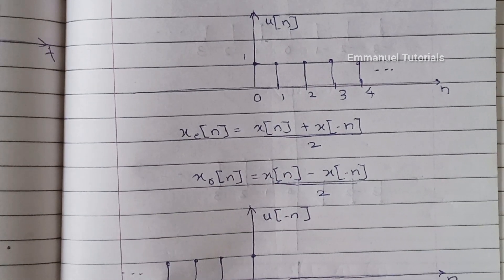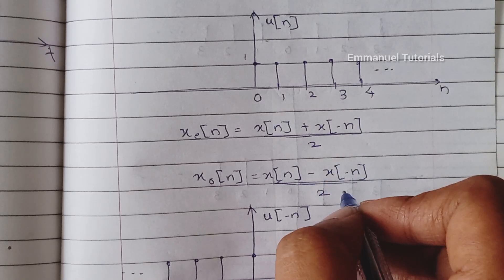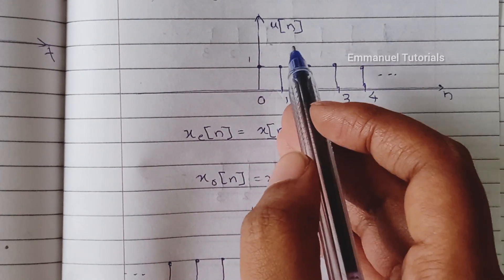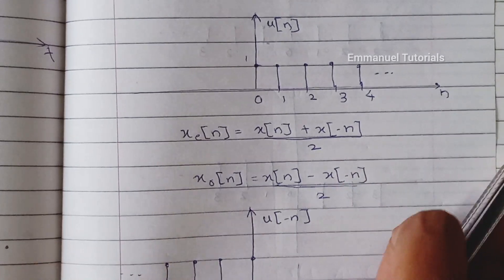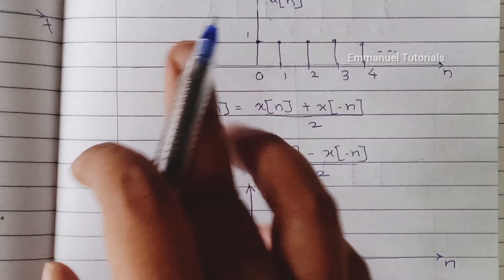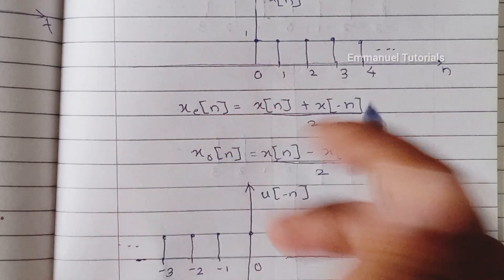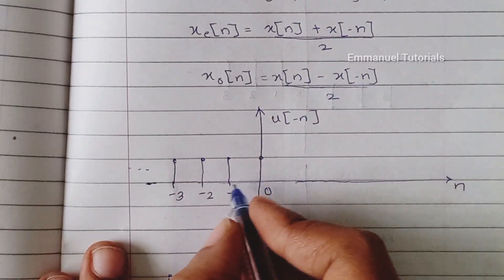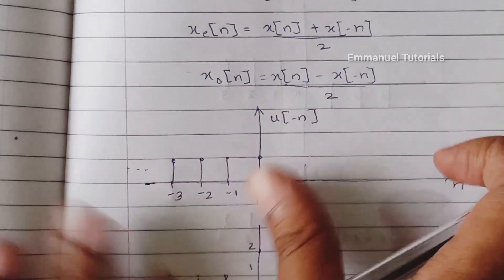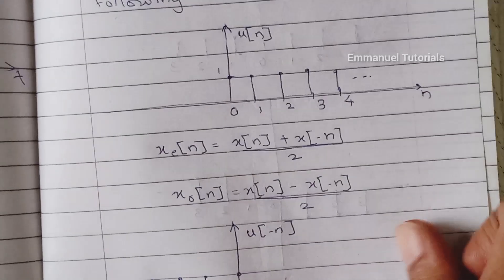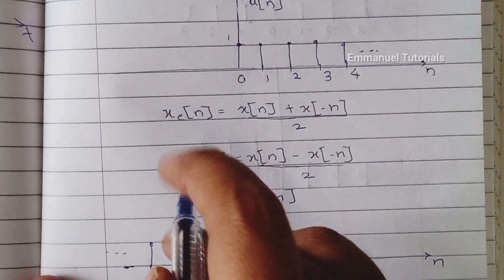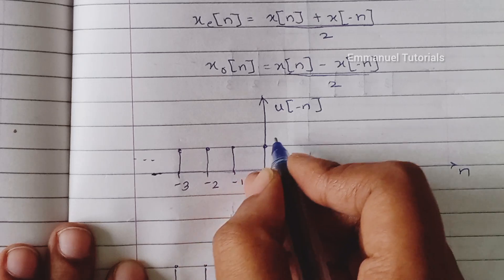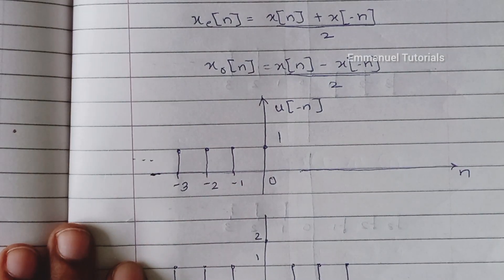Let's start with the even part. For both parts we are going to require x(-n). We have already drawn x(n), so x(-n) will be u(-n). u(-n) means you reverse the signal around the amplitude axis, and when you reverse it, the signal which started from 0 to infinity will now start from minus infinity and end at 0 with amplitude 1. That is what is drawn here.